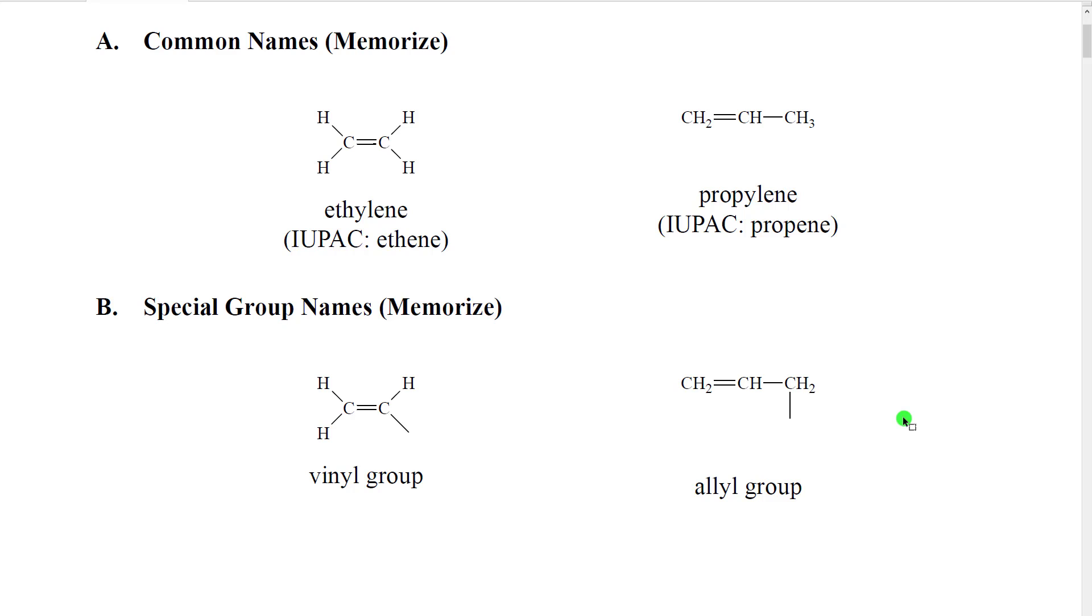Related to that then would be this group. This is called the allyl group. In the allyl group, we again have a propylene, but we have some substitution on not the carbons of the double bond, but on one of the carbons directly adjacent to the double bond.